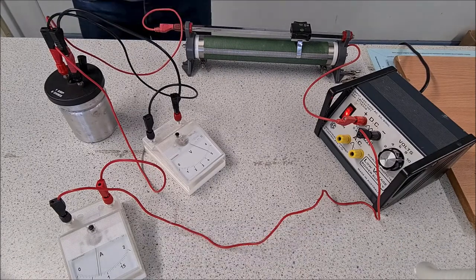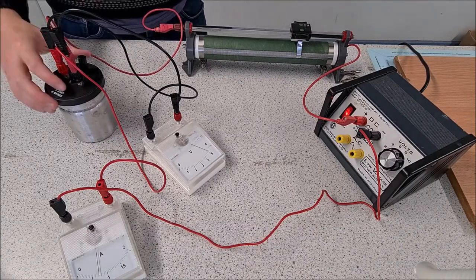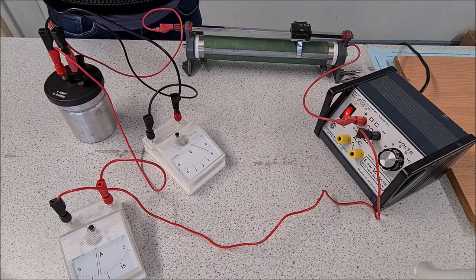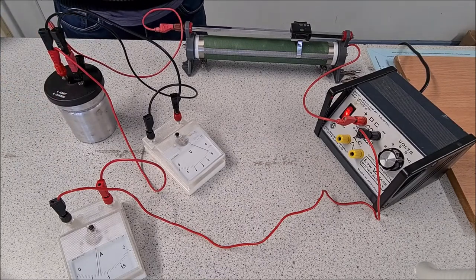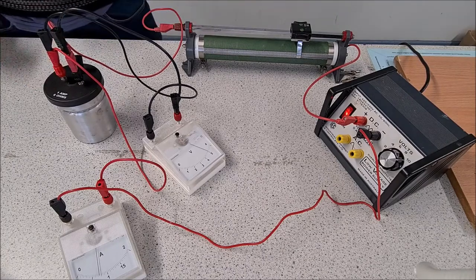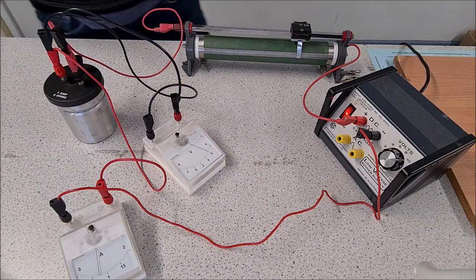So we can see that for the metallic conductor, it's a linear relationship, which we already know from Ohm's law. So we're going to now change up this, and instead we're going to put in a filament bulb.